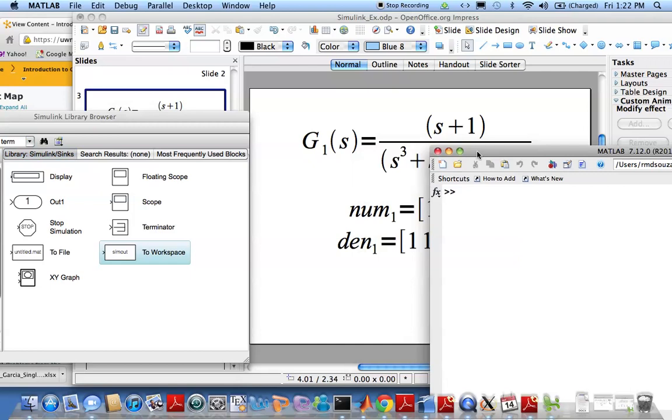Like I did here, num1 equal to [1 1], den1 equal to [1 1 2 1]. And let's say sys1 equal to tf. tf is a standard function, total transfer function, that generates the transfer function in the s domain, the Laplace domain, given a numerator and a denominator. There you have it.